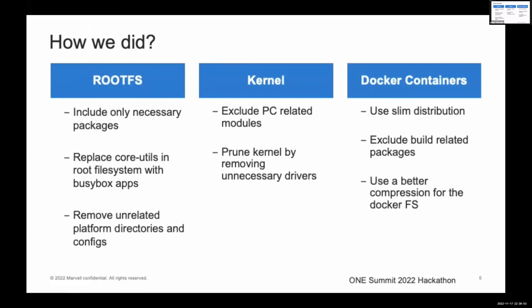For the hackathon, we looked at the root file system, the kernel, and the docker containers. For the root file system, we removed packages that are not required, like developer utils, compilers, some firmwares like graphics, etc. We also replaced the core utils in the root file system with BusyBox apps, and we excluded unrelated platform directories, retaining only Vistron 3200 case queue related platform directories.